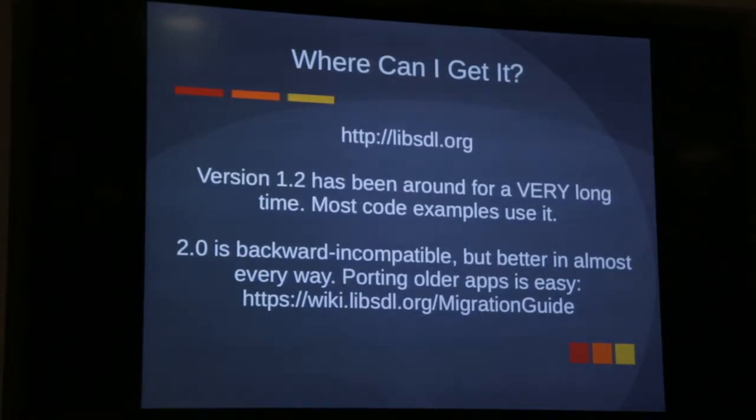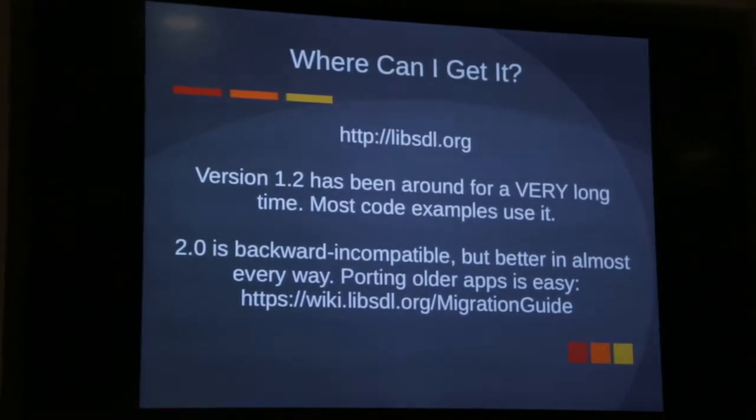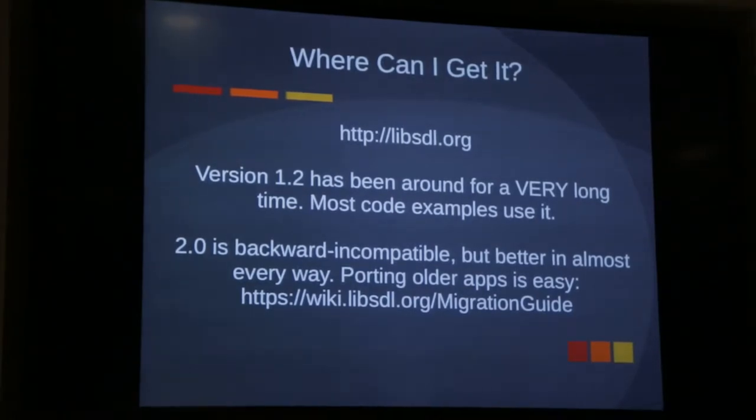You can get it at LibSDL.org. The most common version is 1.2, which has been around for at least 10 years, been stable, and tons of things have been written with it — things like Unreal Tournament, Angry Birds, the Humble Bundle for indie games. Version 2.0 came out last year and it's somewhat backward compatible, but porting is pretty trivial — it typically takes a couple hours tops to port an old app to the new version.